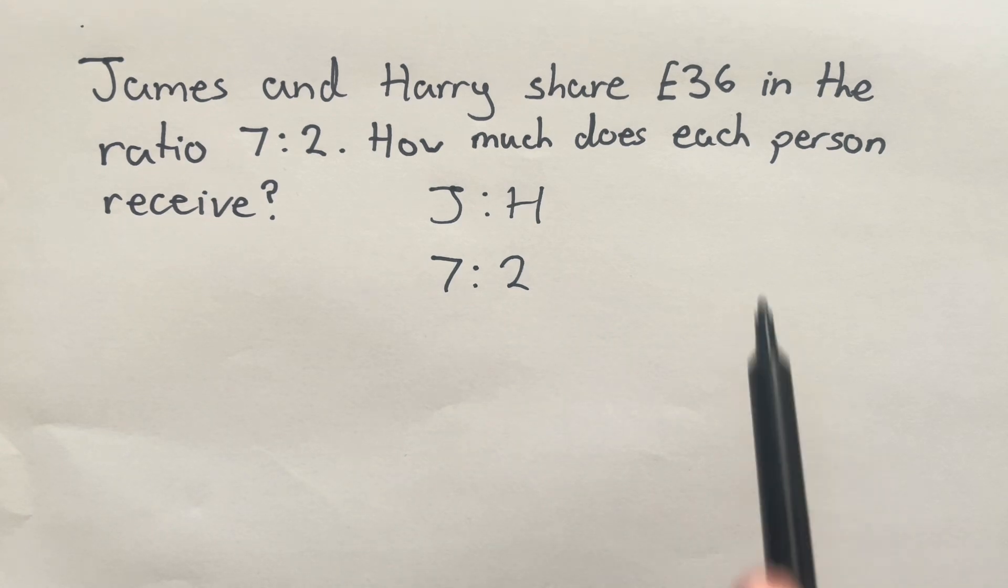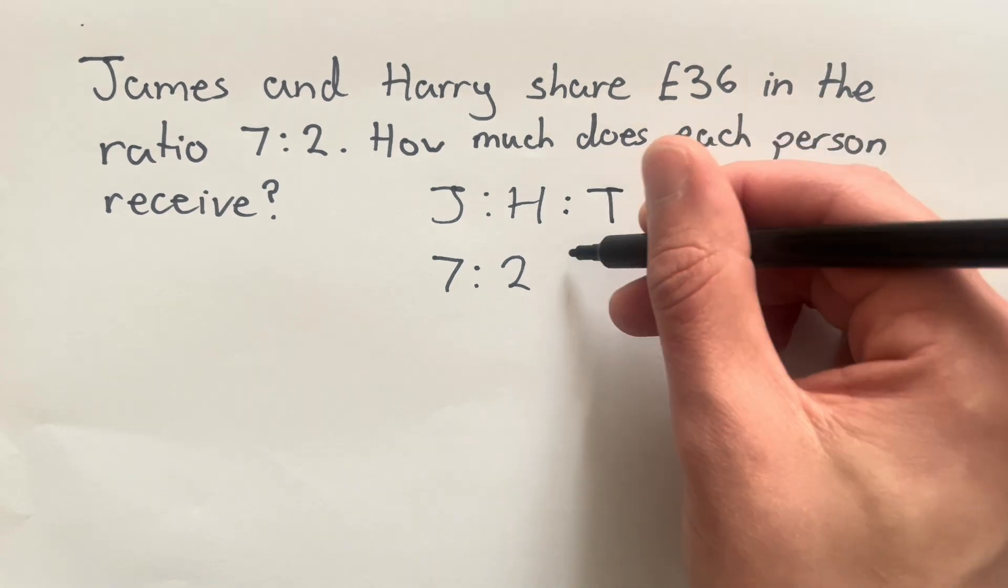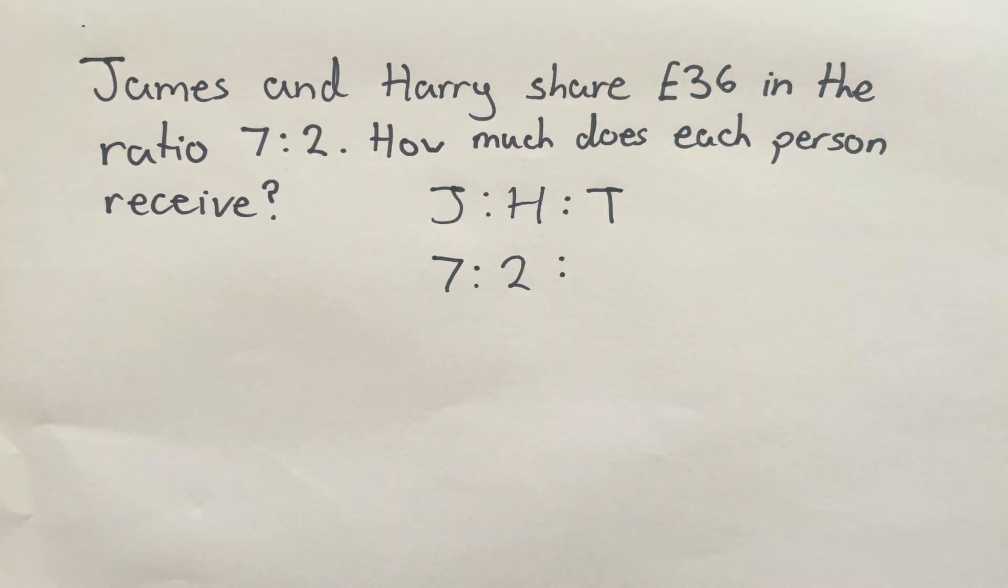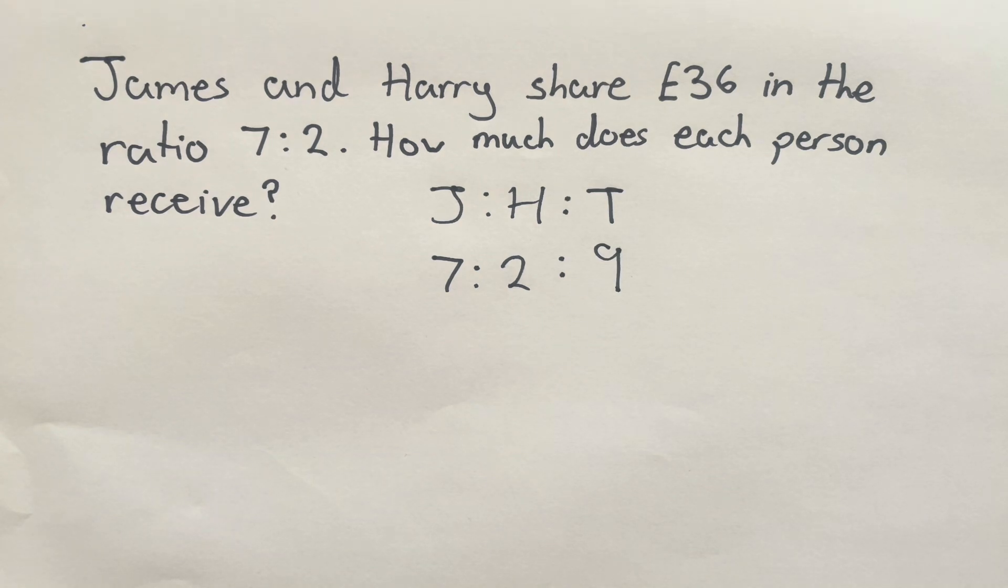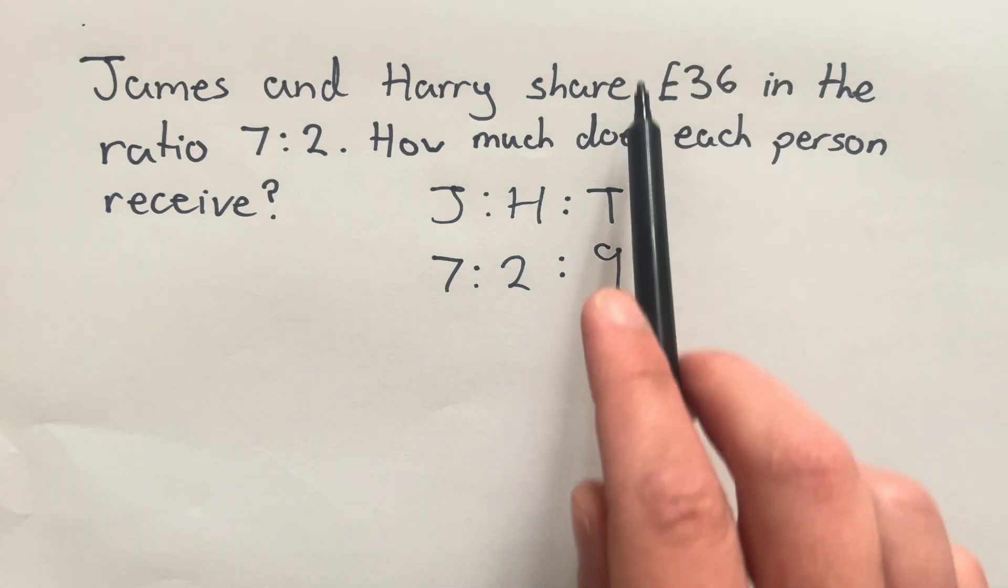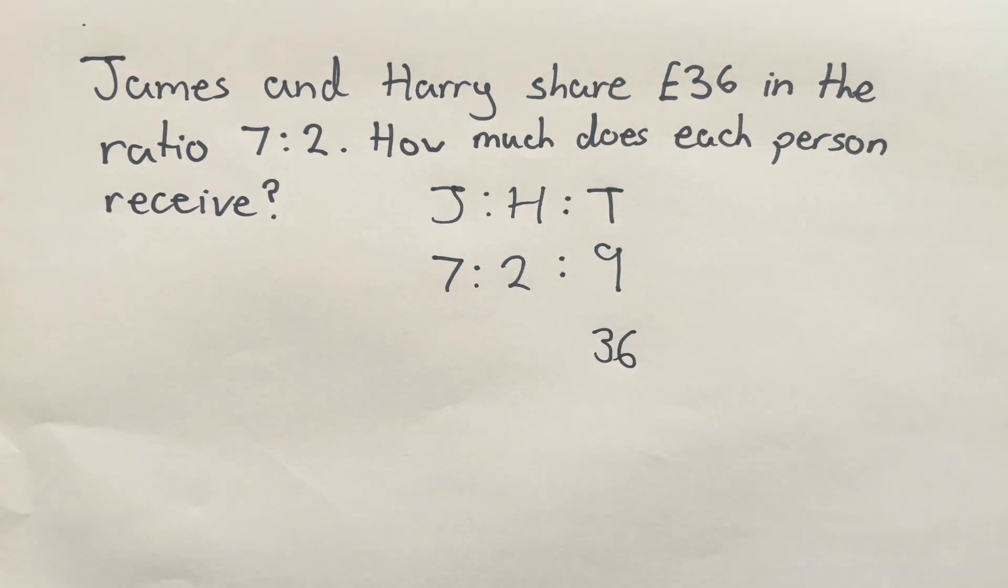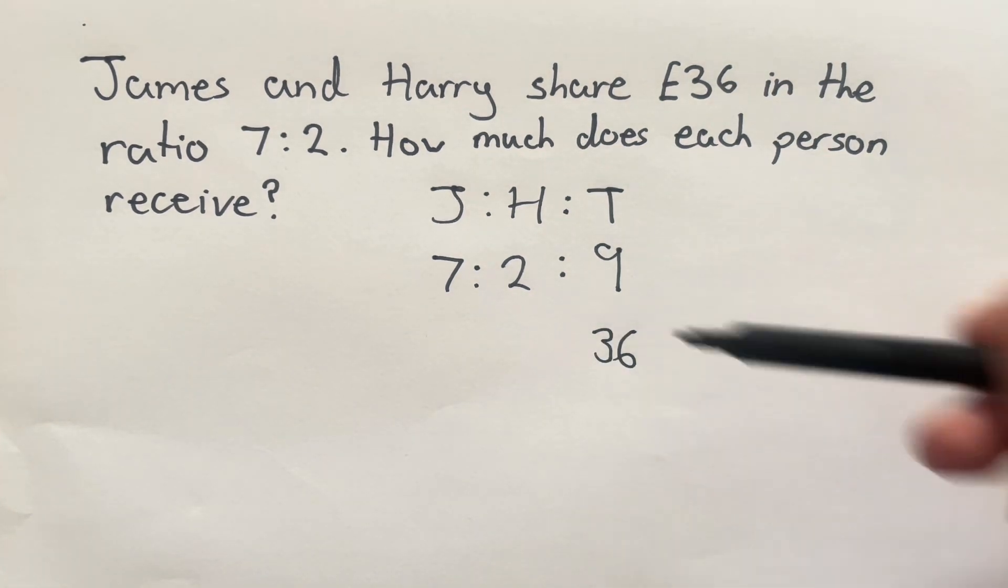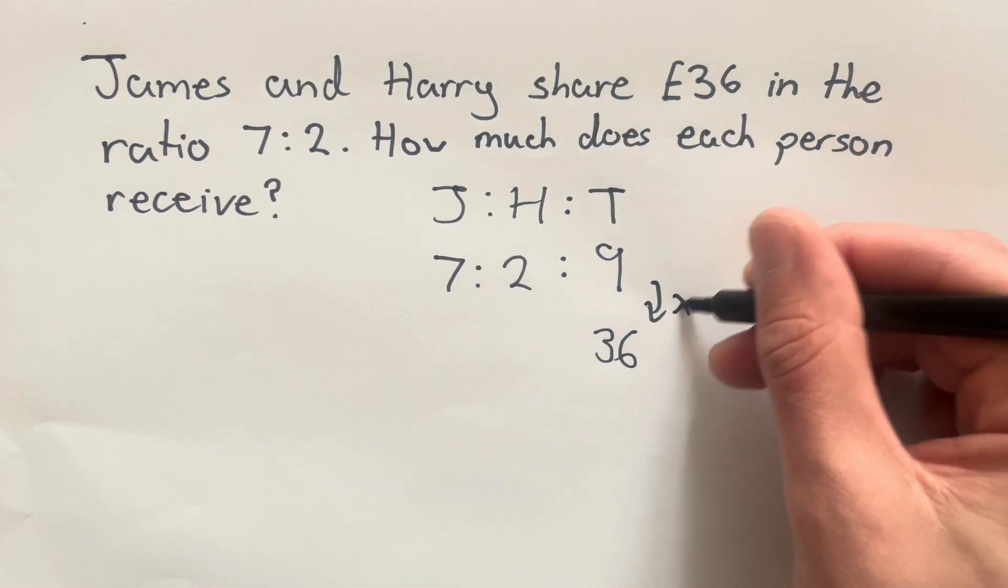Now, like before, we're working with a total here. So I'm going to add a third part to my ratio, which I label T for total. And my total I get by adding these two parts together. Seven add two is nine. Now, my real total in this question is £36. So I need to think, what do I do to go from nine to 36 by multiplying? And I'm going to multiply by four.